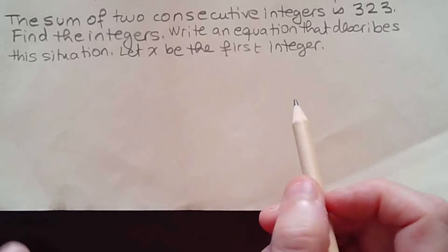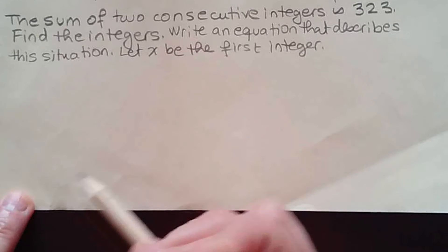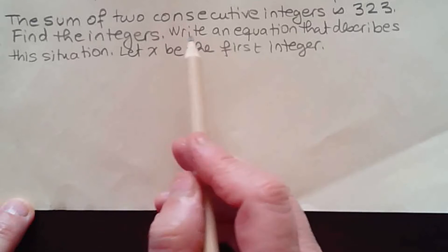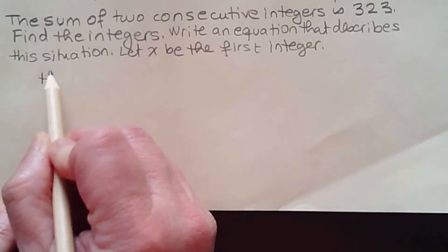If x is the first integer, then the next integer would be x plus one because they are consecutive integers. So the two integers are x and x plus one.